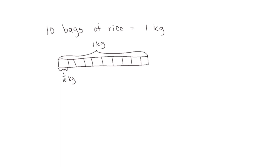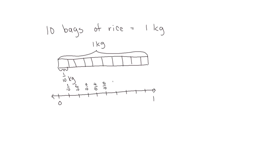Two bags would be 2 tenths, three bags would be 3 tenths, and so forth. Then let's draw a number line that matches up with our tape diagram, starting with 0 kilograms and ending with one whole. As we count on our number line we count by tenths in fractions: one tenth, two tenths, three tenths, four tenths, five tenths, six tenths, seven tenths, eight tenths, nine tenths, and ten tenths equals one.